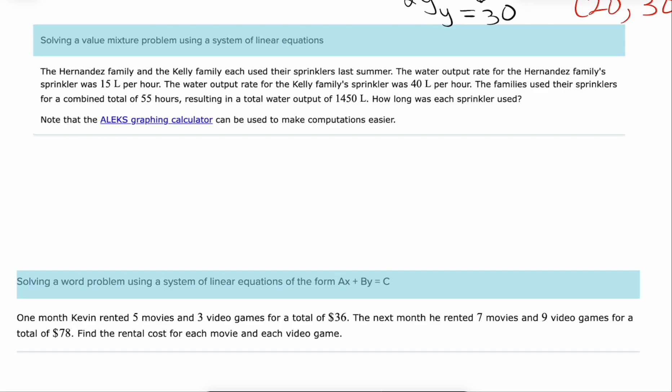It says the Hernandez family and the Kelly family each used their sprinklers last summer. The output rate for the Hernandez family was 15 liters per hour. The water output rate for the Kelly family sprinkler was 40 liters per hour. The families used their sprinklers for a total of 55 hours resulting in a total output of 1,450 liters. How long was each sprinkler used? So let's call x the hours for the Hernandez family and then y the hours that the Kelly family used each of their sprinklers.